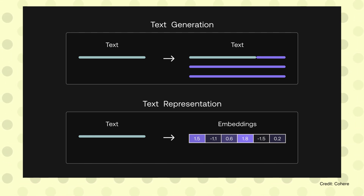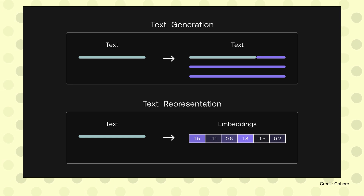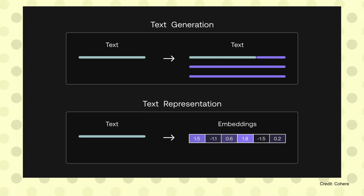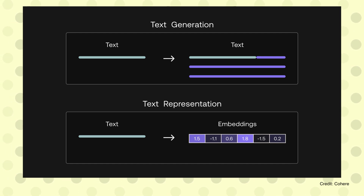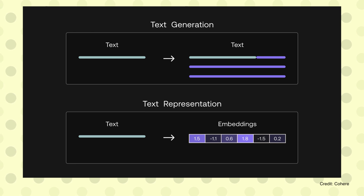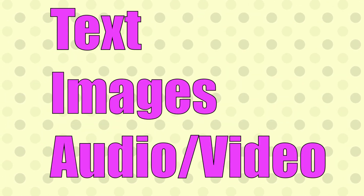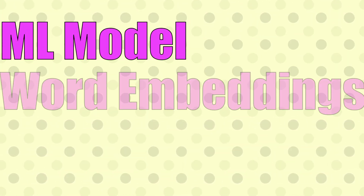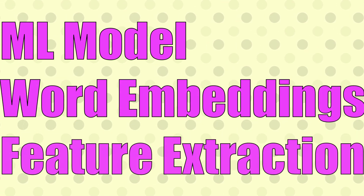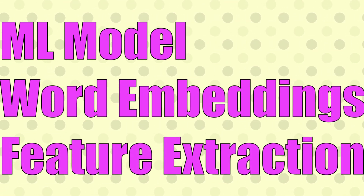Each vector has a certain number of dimensions, which can range from tens to thousands, depending upon the complexity and granularity of the data. The vectors are usually generated by applying some kind of transformation or embedding function to the raw data. The raw data could be text, images, audio, video, or any other format. The embedding function could also be very different — it could be a machine learning model, a word embedding, or simply feature extraction algorithms.